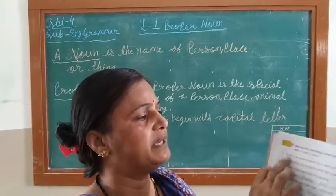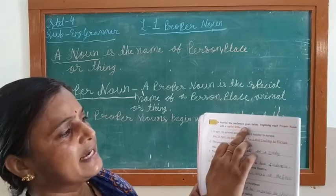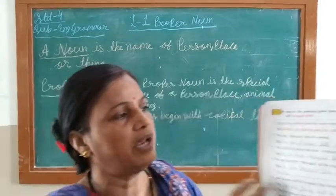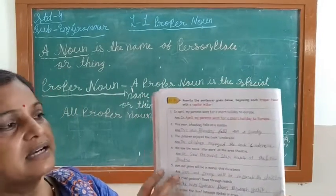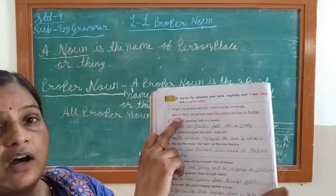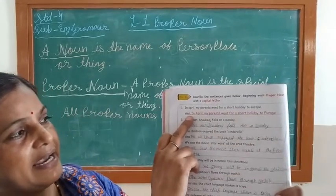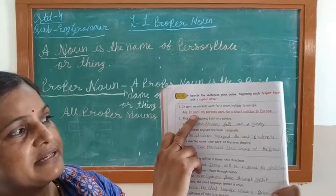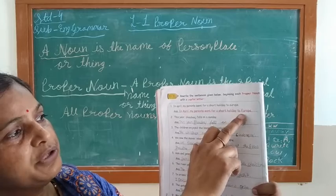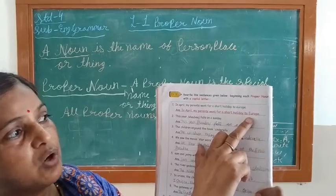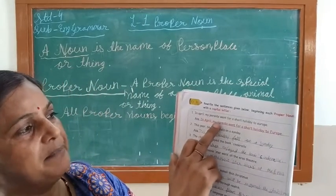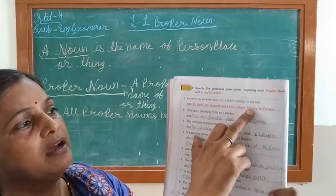Now I explain Exercise B: rewrite the sentences and begin each proper noun with a capital letter. In April, my parents went for a short holiday to Europe. 'April' starts with capital A, and 'Europe' starts with capital E — Europe is a proper name.